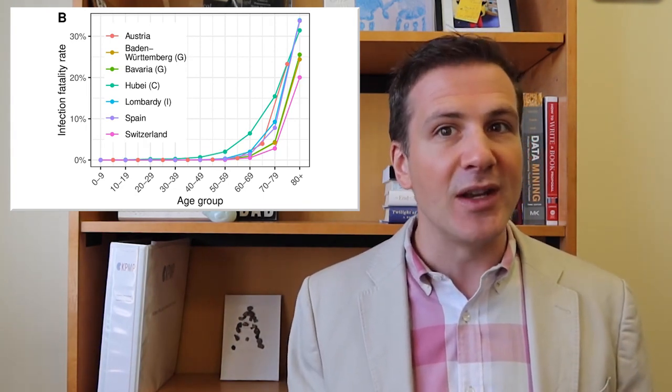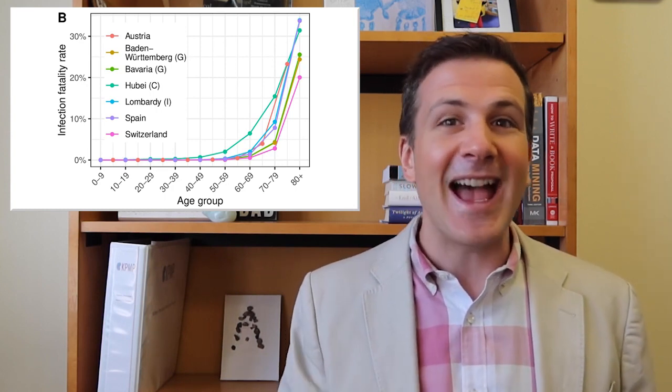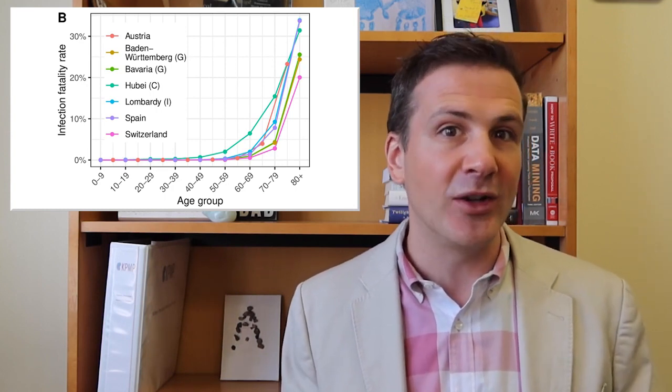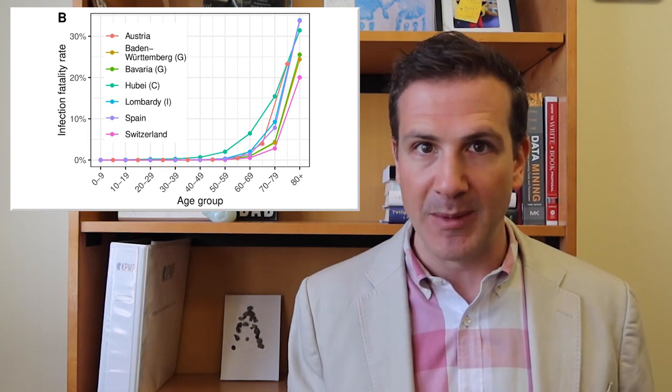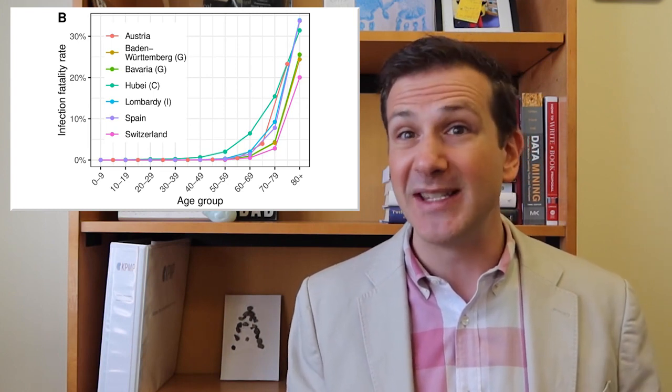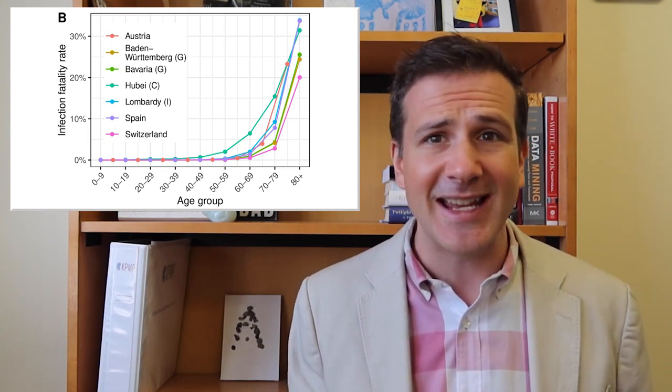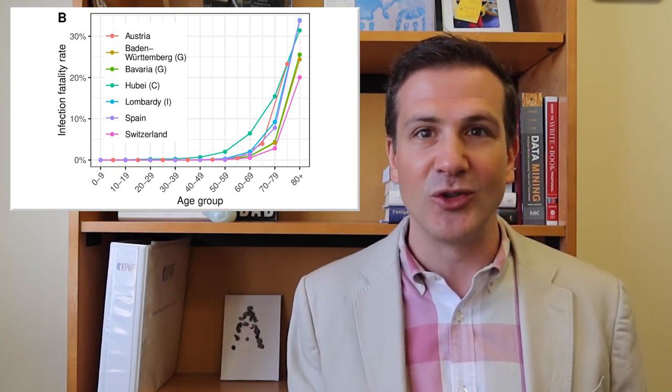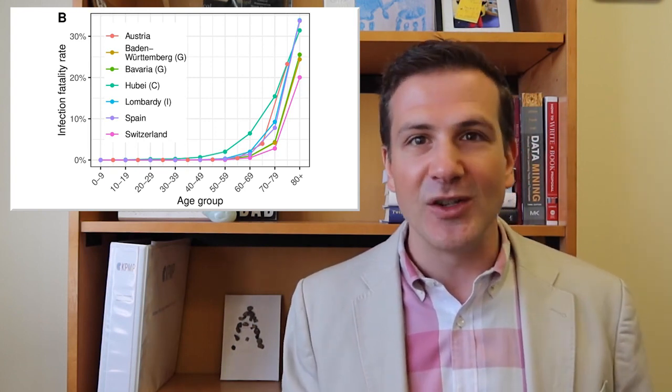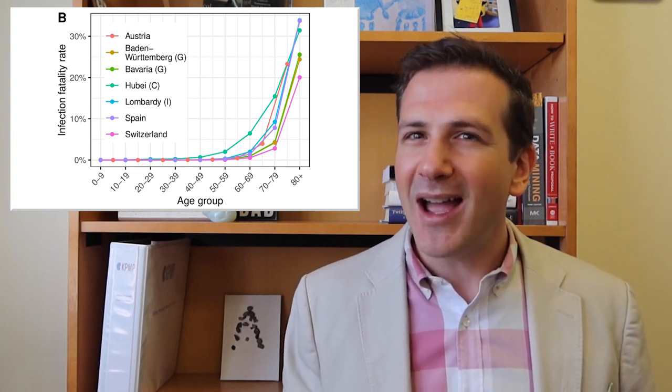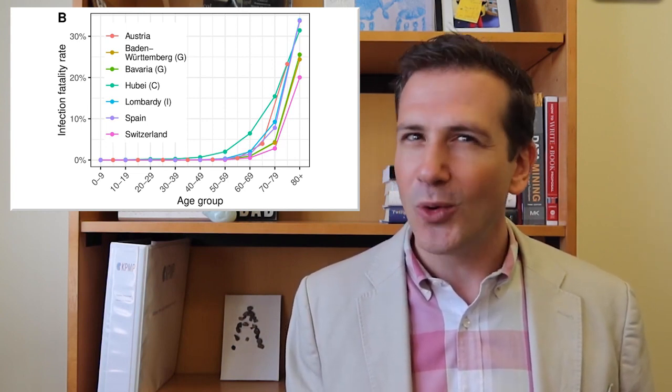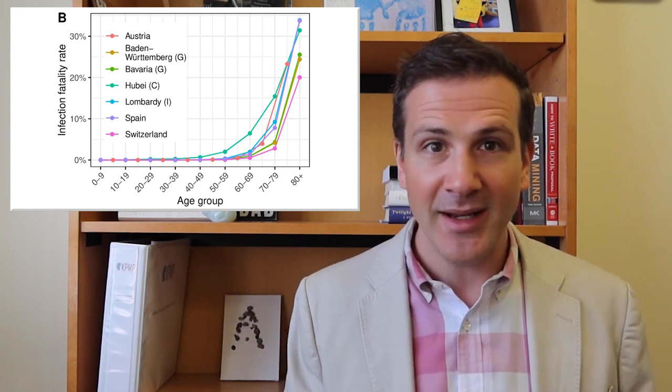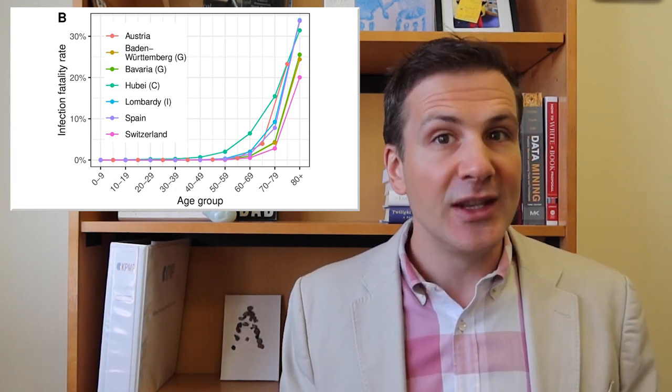Now, this may be driven a bit by one of their statistical assumptions, that the ascertainment of cases is much better among older adults than younger people, considering they are more likely to be symptomatic and more likely to get tested. In other words, they sort of assume we're capturing most of the COVID-19 cases in elderly people already, so the infection fatality rate and the case fatality rate are pretty close. I'm not sure this assumption is totally valid, but it is what it is.